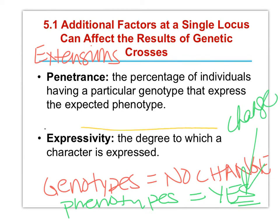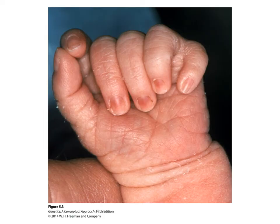The degree to which a character is expressed — so that would be something like if you have webbed feet, how much webbing is there? 40%? You have a lot, you have a little. Here's a picture of a baby's hand. What's odd about it? There are six fingers. That's interesting penetrance.